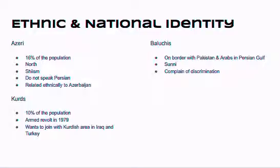The ethnic and national identity of Iran is important to understand. About 60% of the country is Persian, but there are three significant minority groups. The first are the Azeri — 16% of the population, located in the north. They are also Shia, but don't speak Persian and are ethnically related to Azerbaijan. There has been increasing tension between the Azeri and the Iranian government due to tensions with the Azerbaijani government. The group you hear most about is the Kurds — 10% of the population — who organized an armed revolt in 1979 and want to join with Kurdish areas in Iraq and Turkey.